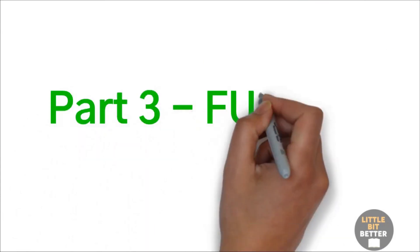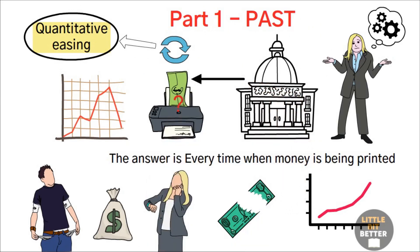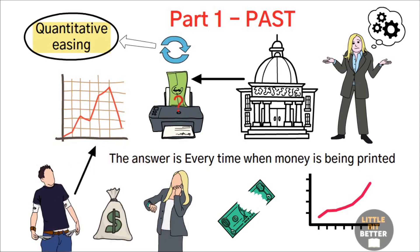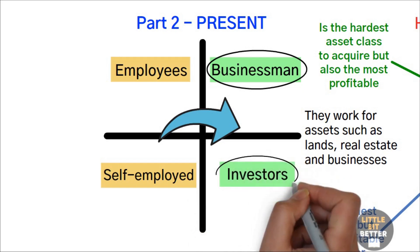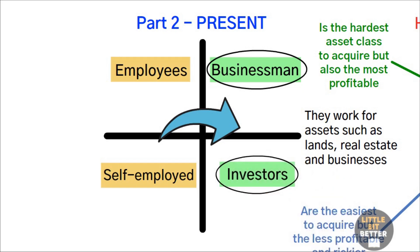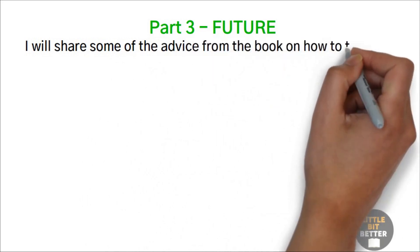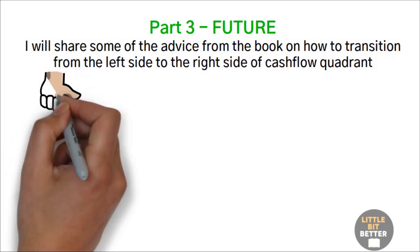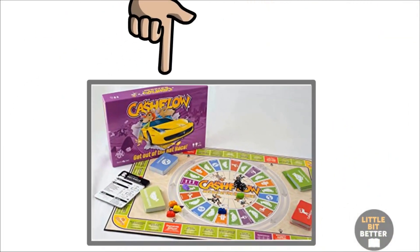Part three, future. Let's recap what we discussed in previous parts. In the first part, we learned that government prints money and it badly affects people who work for money and save money. In the second part, we learned that true wealth is on the right side of the cash flow quadrant. Finally, in this part, I will share some of the advice from the book on how to transition from the left side to the right side of the cash flow quadrant. The author's first advice is to get financially educated by playing the cash flow game. The first best way to learn something is by actually doing it. And the second best way is through simulation, which is what the cash flow game is all about.